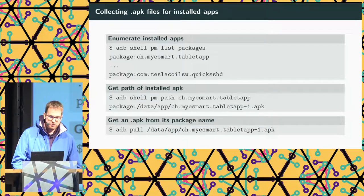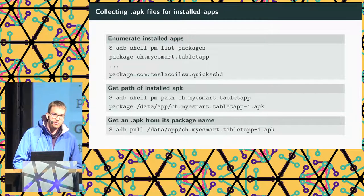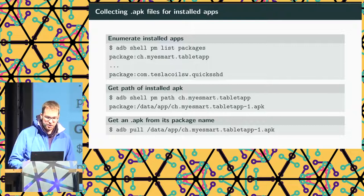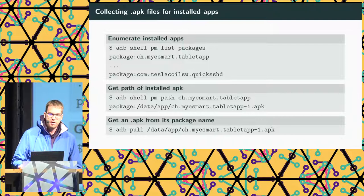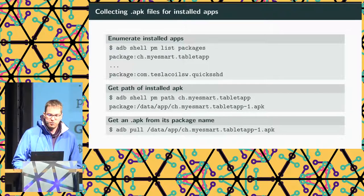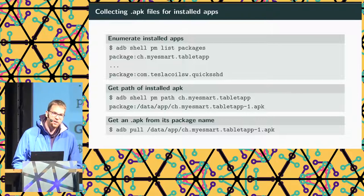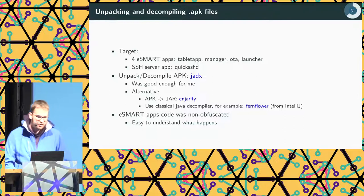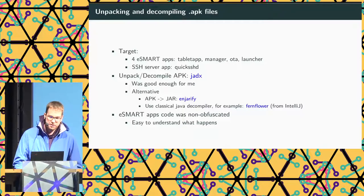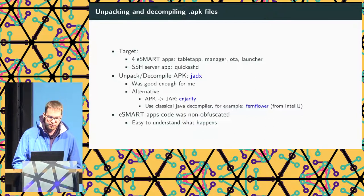One of the first things I did was enumerate the installed apps using ADB shell PM list packages. There were four apps with 'eSmart' in the name — apps made by the vendor — and one app called Quick SSHD, which looked like an SSH server installed on the tablet. Using another command, I got the APK file path, pulled those APKs to my laptop, and identified four target eSmart apps: a tablet app, manager app, OTA app, and launcher app, plus the Quick SSHD SSH server.